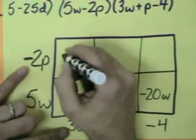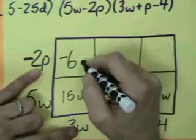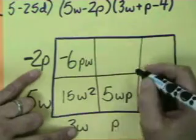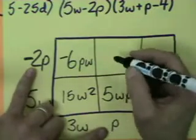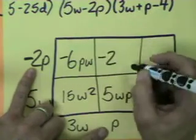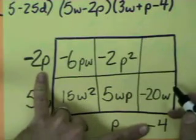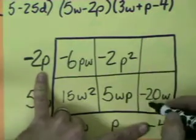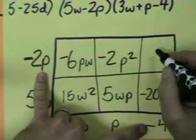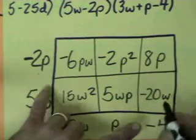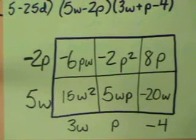3 times negative 2 is negative 6, and this is going to be PW. Negative 2 times 1 is negative 2. P times P is P squared. Now these two. Negative 2 times negative 4 is positive 8, and there's nothing to multiply the P by.